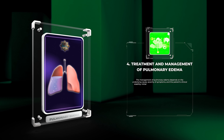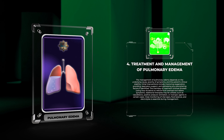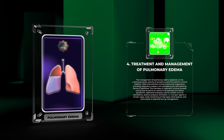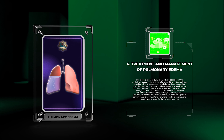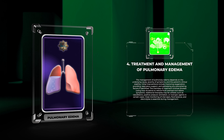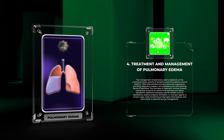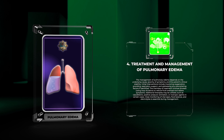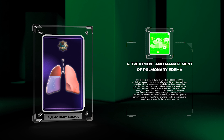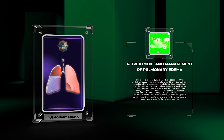The management of pulmonary edema depends on the underlying cause, severity of symptoms, and the patient's clinical stability. Initial interventions include improving oxygenation, providing respiratory support, and addressing any precipitating factors. The mainstay of treatment involves diuresis using loop diuretics to reduce fluid overload, with additional therapies such as vasodilators, positive pressure ventilation, or inotropic agents in certain cases.